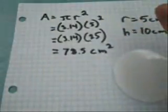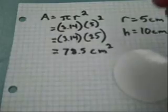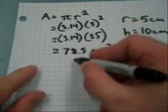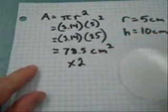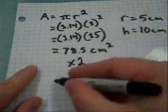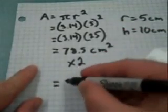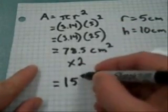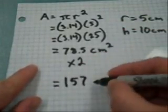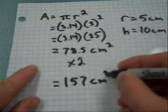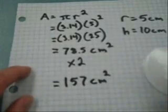Now if you remember, going back to our original object, we have two circles. So you need to remember to multiply this by two, so that you know that the two circles have a total of 157 square centimeters.